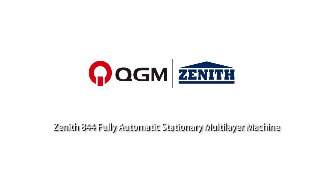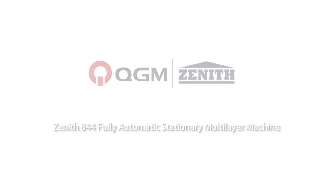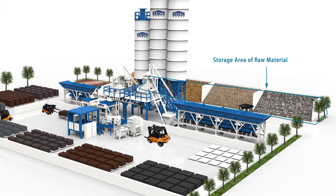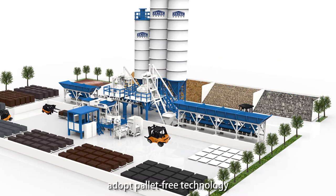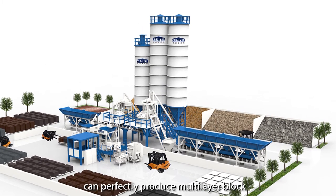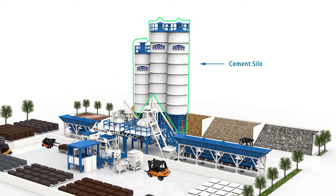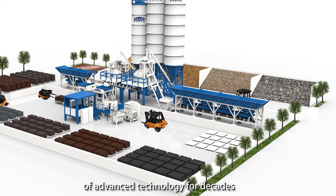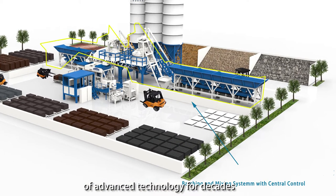Zenith 844 Foley Automatic Stationary Multi-Layer Machine. The 844 Foley Automatic Stationary Multi-Layer Machine adopts Pallet-Free Technology and can perfectly produce multi-layer blocks. It is Germany Zenith's research achievement of advanced technology for decades.